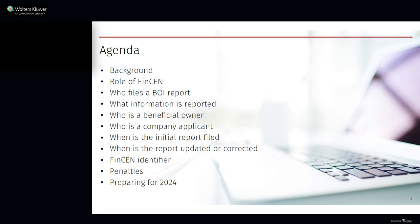Here's our agenda. I'll begin by providing some background. Then we'll discuss the role of the Financial Crimes Enforcement Network, better known as FinCEN, which is the federal agency that wrote the final rule implementing the reporting requirement and with which you will file your report. Then we'll dive into what the final rule says — who has to file a BOI report, what information has to be reported, who is a beneficial owner, who is a company applicant, when the initial report has to be filed, when it has to be updated or corrected, the FinCEN identifier, penalties for violating the law, and things you should start doing this year to prepare. Lots to unpack, so let's dive in.